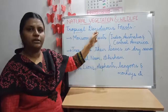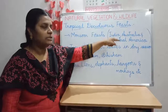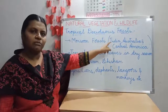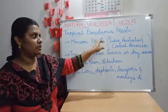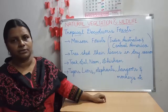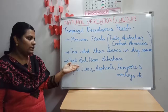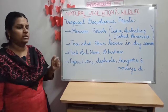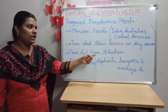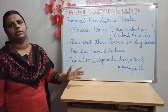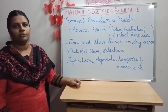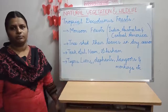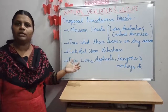You can find deciduous or monsoon forests in countries that receive monsoons — some parts of India, Australia, Central America, etc. In India, the maximum parts have this kind of deciduous forest. The important hardwood trees available in this tropical deciduous forest are teak, sal, neem and shisham. These are commercially important, luxurious and very costly trees. Teak wood is widely used for making furniture.